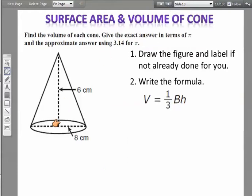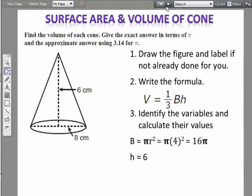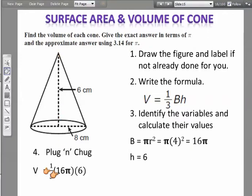Let's look at a right cone and see how this works out. I don't need to draw the figure. Write the formula, identify the variables. And look here, they've given me the diameter again of 8. I got to divide that by 2, so I get my radius of 4. So the area of my base is 16π. The height of my cone is 6.